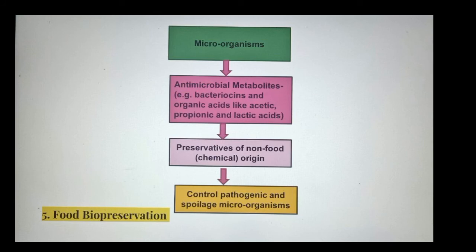When we talk about food biopreservation, antimicrobial metabolites — such as bacteriocins and organic acids like acetic, propionic, and lactic acid — from desirable microorganisms are being developed and used in food in place of preservatives of non-food origin, to control pathogens and spoilage microorganisms in food.